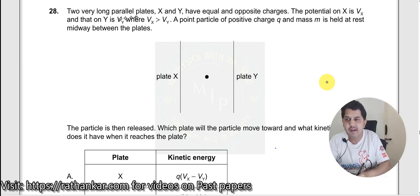Question number 28. Two very long parallel plates X and Y have equal and opposite charges. The potential on X is Vx. Here it is Vx and here it is Vy.